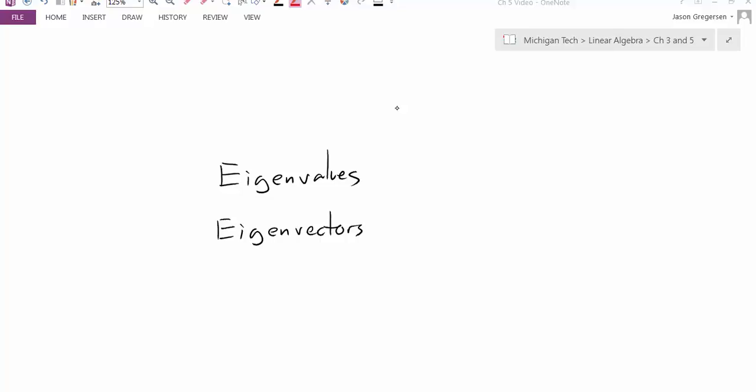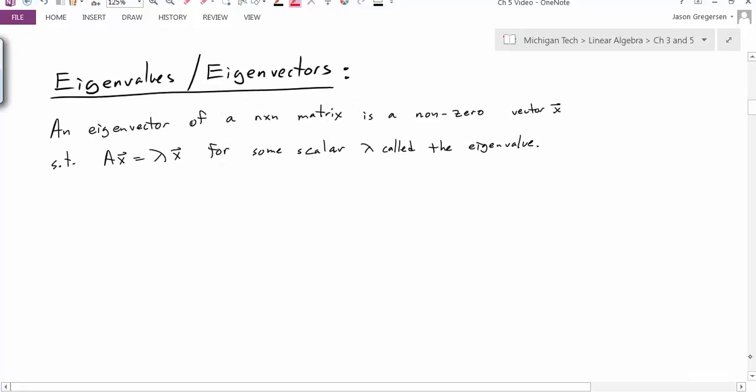Hello everyone, my name is Jason Gregerson and this video is going to be an introduction to eigenvalues and eigenvectors. We'll start off with the definition. An eigenvector of an n by n matrix is a non-zero vector x such that this equation holds: A times the vector x equals lambda times the vector x